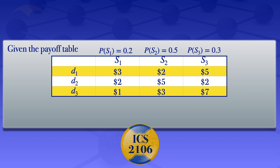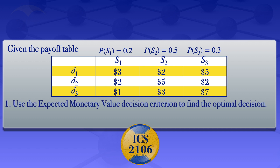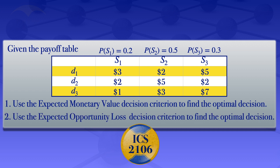In this tutorial I am going to use the expected monetary value decision criterion to find the optimal decision, and number 2, I will use the expected opportunity loss decision criterion to find the optimal decision.